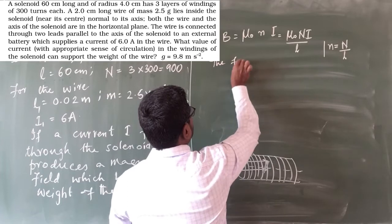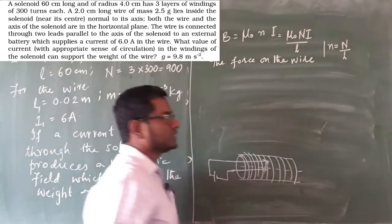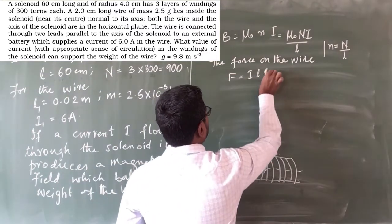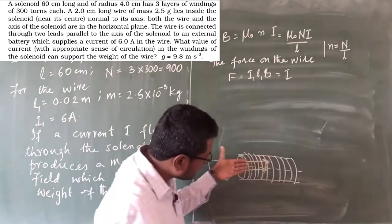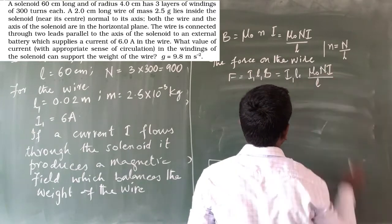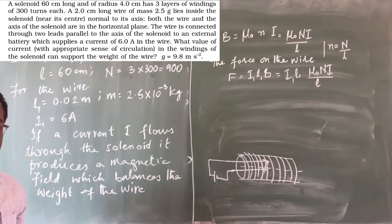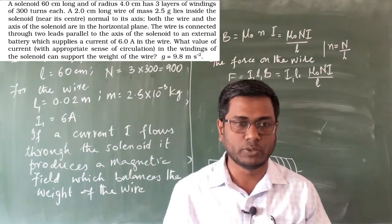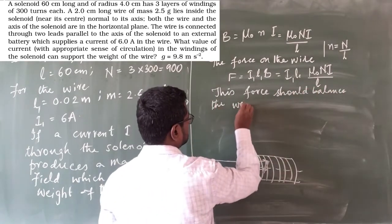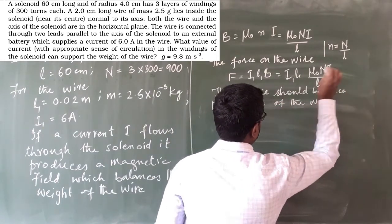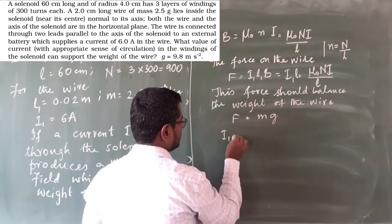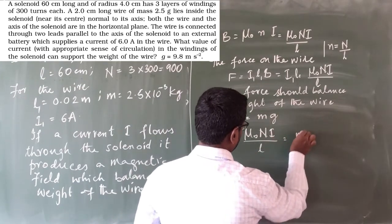The force on the wire is given by the equation for a current-carrying conductor: F equals I·L·B. So the force is I₁·L₁·B, which equals I₁·L₁·(μ₀NI/L). This force should balance the weight of the wire, so F equals Mg. Therefore: I₁·L₁·(μ₀NI/L) equals Mg.